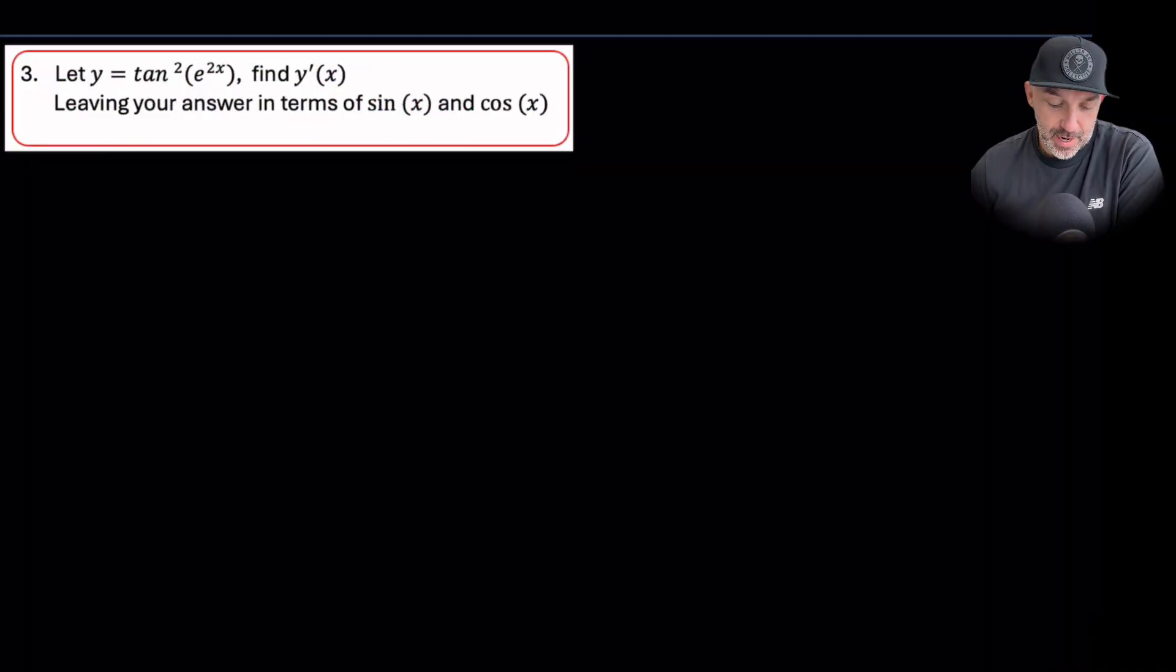Question 3. Let y equal tan squared e to the 2x. Find the derivative function. Leave your answer in terms of sine and cos. So there may be an extra step at the end of this one that we need to look at.